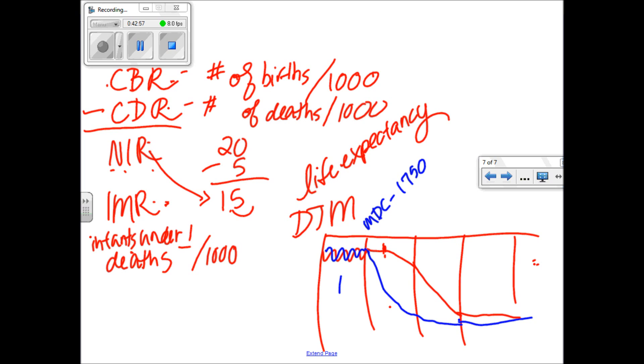Stage 4 is going to be the part where we pretty much level off to where the NIR will almost be 0, which means that you are going to have 0 population growth. So whatever your CBR is, your CBR will equal that, and you're no longer going to have growth. You typically in this stage, stage 1, you will start out in kind of a rough standard of living, better standard of living over here in stage 4.